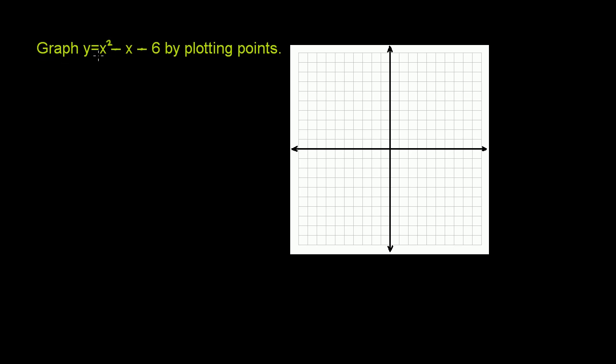We're asked to graph y equals x squared minus x minus 6 by plotting points. So let's just make a table. Let's pick some x values and figure out what y is going to be based on this relation up here.